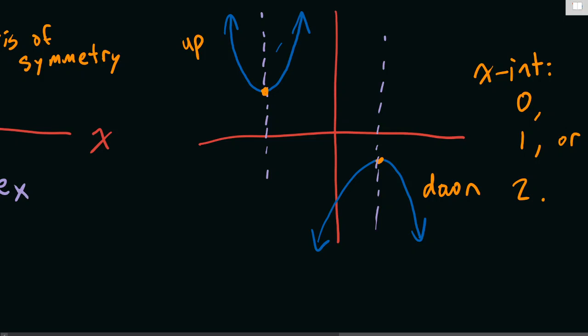One other thing, I just realized I threw the word parabola out there. The shape of this graph is called a parabola. So the function is a quadratic function and the shape of a quadratic function is a parabola. And those are the properties of quadratic functions.